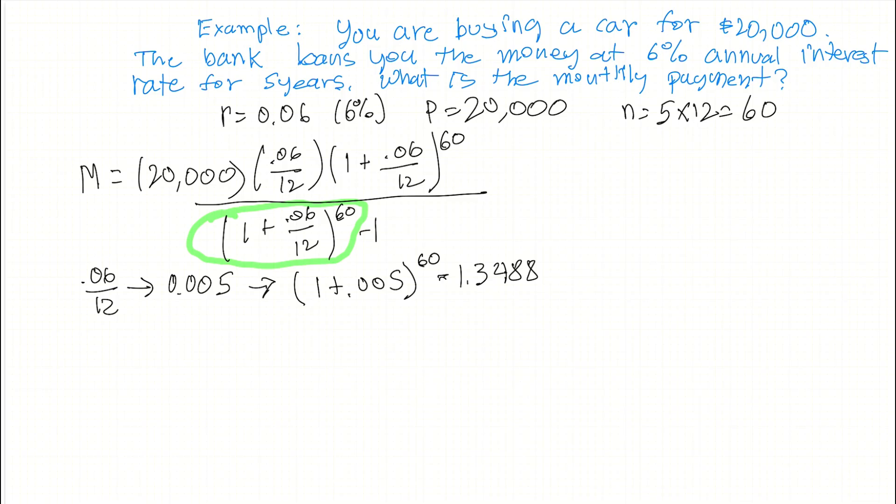So let's expand all this out now. So putting that in there, the monthly payment now is 20,000 times this 0.005 times this 1.3488. Now we divide it by, and the number in the green we already calculated, so that's 1.3488 minus 1.